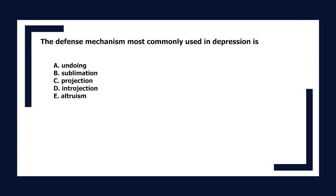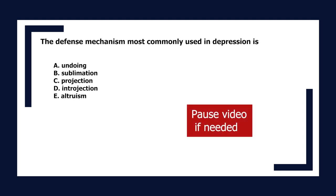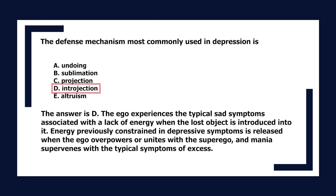The defense mechanism most commonly used in depression is: A. Undoing, B. Sublimation, C. Projection, D. Introjection, E. Altruism. The answer is D. The ego experiences the typical sad symptoms associated with a lack of energy when the lost object is introduced into it. Energy previously constrained in depressive symptoms is released when the ego overpowers or unites with the superego, and mania supervenes with the typical symptoms of excess.